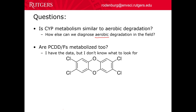My other question is whether the PCDDFs are being metabolized as well. The 2,3,7,8-tetrachlorodibenzodioxin — the problem is that by definition, if they have 2,3,7, and 8 chlorines, then by definition they do not have two adjacent positions where the cytochrome can attack. So as far as I know, the answer is no, they don't get metabolized. But that's something I've been thinking about, because I have the data to investigate it.